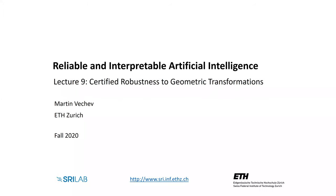Hi everybody, and welcome to Lecture 9 of the Reliable and Interpretable Artificial Intelligence course taught at ETH Zürich. My name is Martin Vechev, and I'm a professor at ETH. In this Lecture 9, we are going to be studying techniques for certifying robustness to geometric transformations of neural networks. So far, what we studied are techniques for certifying robustness of input changes, mostly focusing on L-infinity norms and LP norms in general. Now we are going to see how to apply them to certifying more semantic level changes.